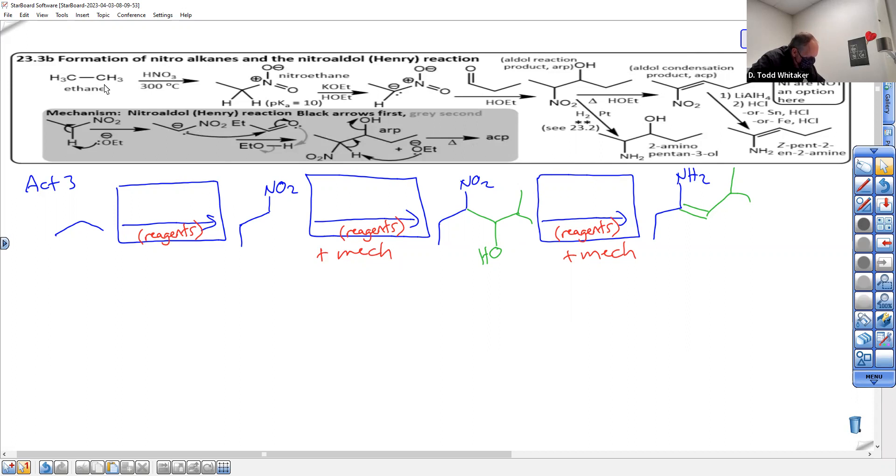So what happens? You have to have a nitroalkane - nitroaldols from nitroalkanes. How do you make a nitroalkane? Under very severe conditions. I mentioned earlier in class that if you treat hydrocarbons like ethane with heat in excess of a couple hundred degrees Celsius, they catch fire.